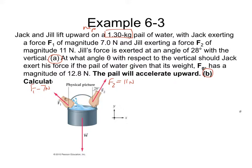We don't like when angles are based off of the vertical. The problem gives 28 degrees from the vertical, which is perfectly legitimate, but we prefer angles based from the horizontal. So let's change this: it's still 28 degrees from the vertical, but the angle we care about — subtracting from 90 degrees — is 62 degrees. That's going to be theta 2, Jill's angle: 62 degrees from the horizontal. So ignore the 28; we're going to deal with 62.